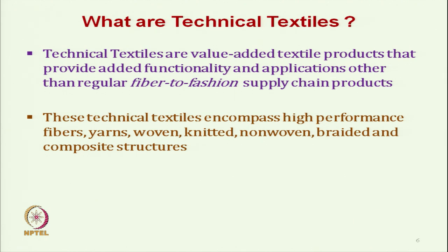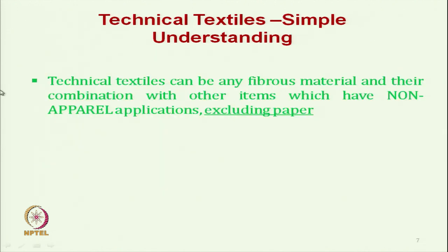Technical textiles encompass high performance fibres, yarns, and different types of conversion techniques like woven, knitted, non-woven, braided, as well as composite structures. Simply put, technical textiles can be any fibrous material and their combination with other items which have non-apparel application, excluding paper.